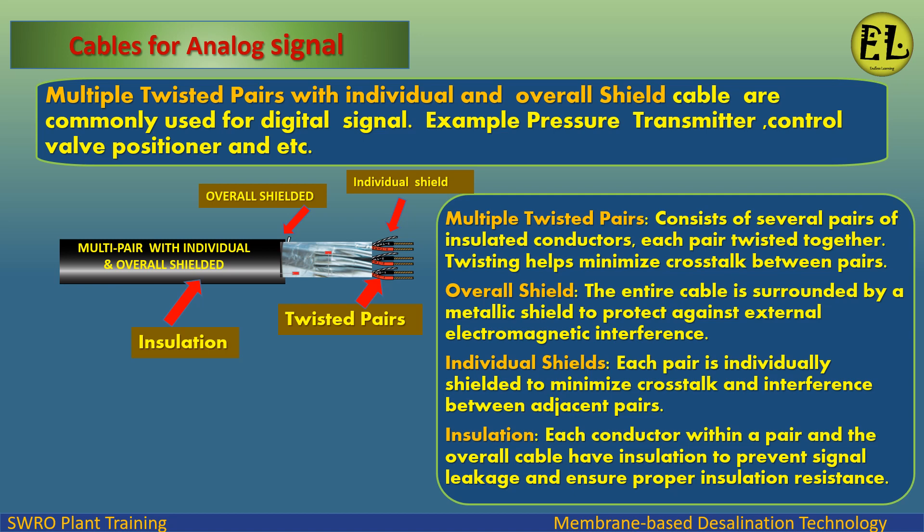Twisting helps minimize crosstalk between pairs. The entire cable is surrounded by a metallic overall shield to protect against external electromagnetic interference. Each pair is individually shielded to minimize crosstalk and interference between adjacent pairs. Each conductor within a pair and the overall cable have insulation to prevent signal leakage and ensure proper insulation resistance.